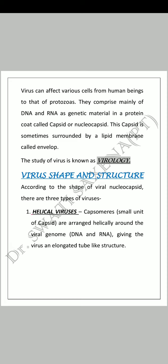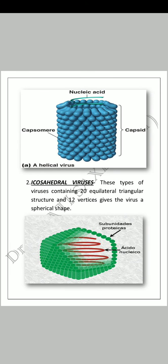The study of virus is known as virology. Virus کی study کو virology بولا جاتا ہے۔ Virus shape and structure: according to the shape of the viral nucleocapsid, there are three main types of viruses۔ Virus کی nucleocapsid کے shape کے according ہم virus کی shape determine کرتے ہیں۔ پہلا ہے helical viruses۔ Helical viruses میں capsomers ہوتے ہیں جو کہ small units of capsids ہوتے ہیں، اور یہ helical shape میں DNA اور RNA کے around present ہوتے ہیں، giving the virus an elongated tube-like structure۔